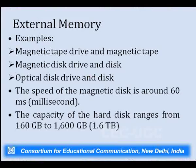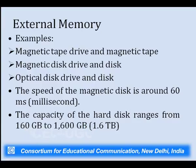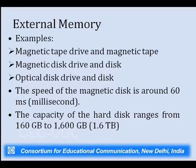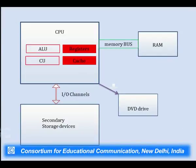In external memory, different types include magnetic tape, magnetic disks, and optical disks. The speed of the disk is around 60 milliseconds and the capacity may vary from 160 gigabytes to about 1600 gigabytes.